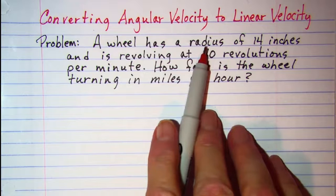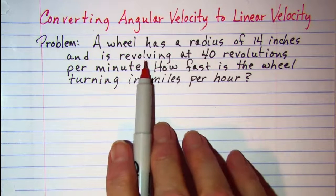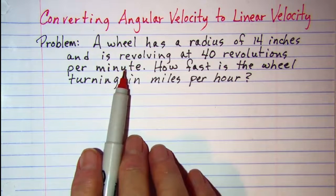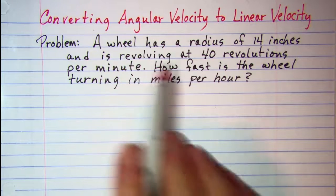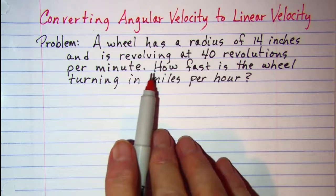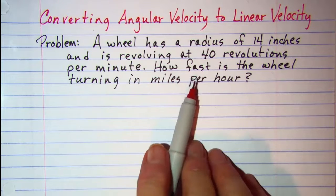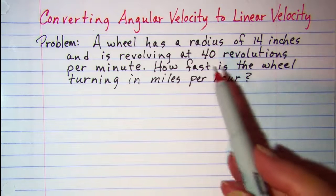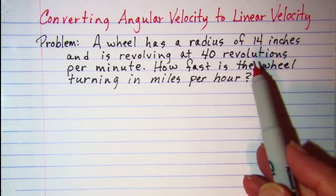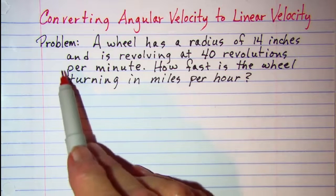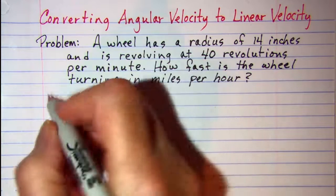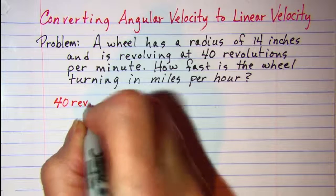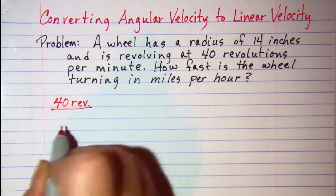Now first of all we have a given rate of 40 revolutions per minute. So that's what we're going to start with and we're going to convert it to a rate that's in miles per hour using unit multipliers. When you see the word per, that means divided by. So we're going to start with 40 revolutions per minute.